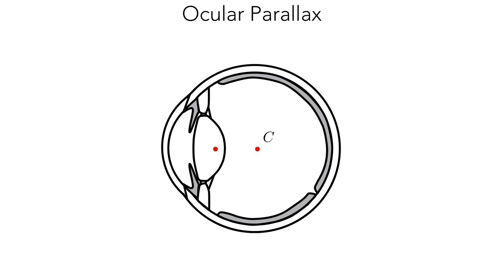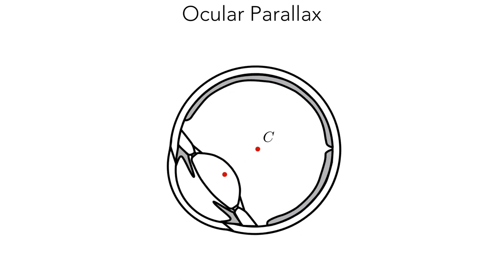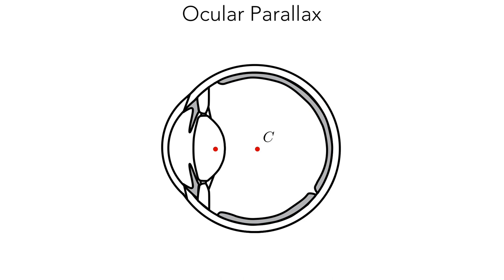This cue occurs because the centers of rotation and projection of the eye are not the same. As a result, parallax is observed as the eye rotates. The complex optics of the eye can be reduced using a thick lens model, in which the front nodal point N defines the center of projection of the eye.